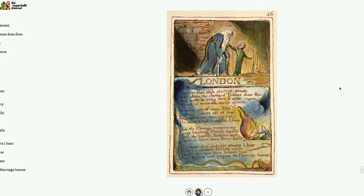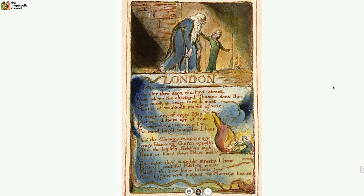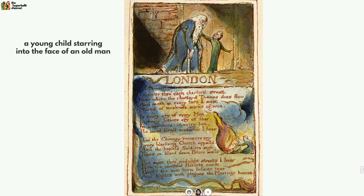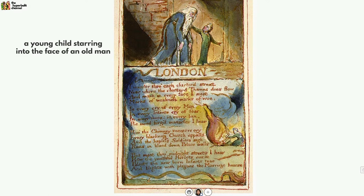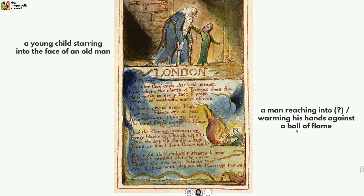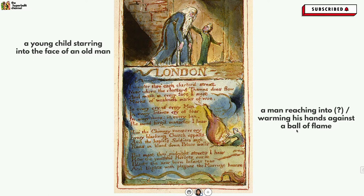In the original publication of London, the poem's text is placed under a painting of a young child who seems to be guiding a hunched old man along the street while staring into the old man's weary looking face. Next to stanzas two and three, there's another drawing of a man who's reaching into an outsized ball of flame — or perhaps warming his hands against it; it's not very clear. I'll simply point them out for now, and we will return to them at the end of our analysis when we will have developed a more sophisticated interpretation of the poem.